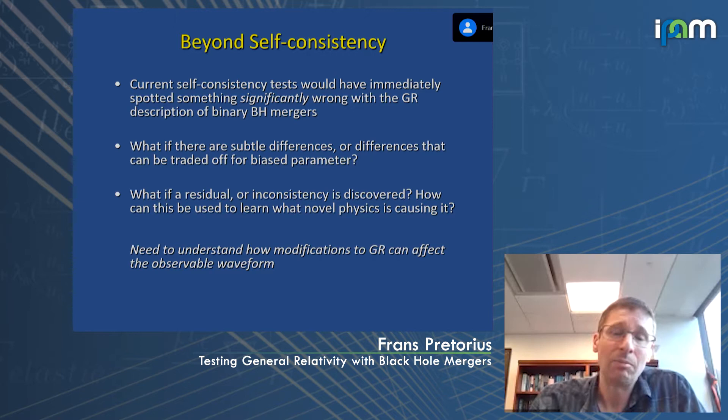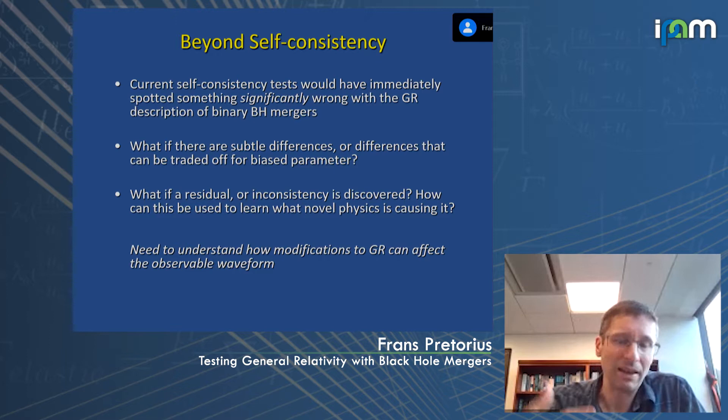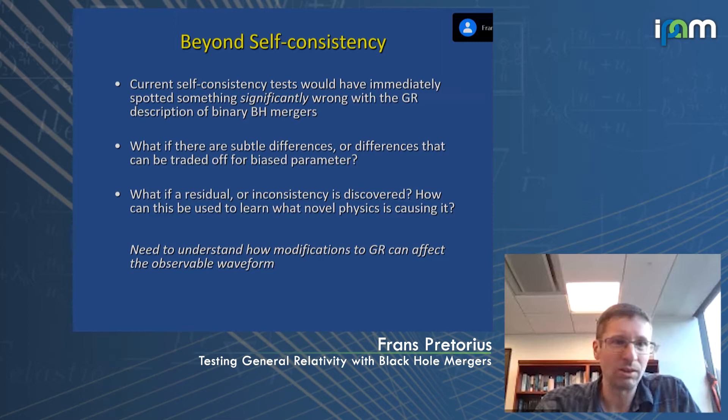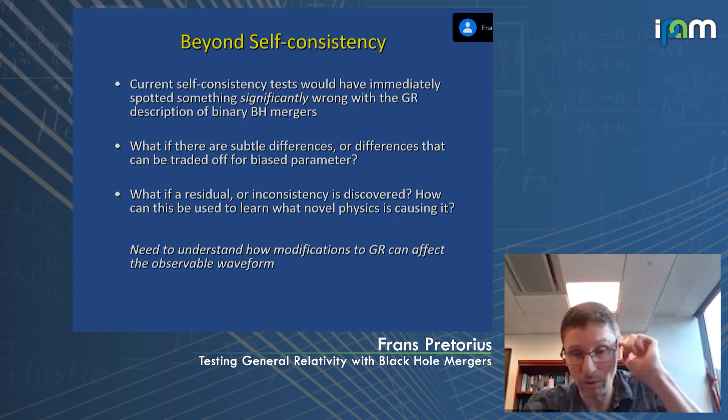One problem with consistency tests is they're not the most sensitive way of digging into the data to find subtle effects, particularly effects that might be traded off with parameter bias. Another reason to look at how waveforms could be different is — if something new is discovered — how can we interpret what it is? What physics does it point to, what structures around the black hole might it indicate? To answer those questions, you need to understand how things could be different if relativity were wrong.